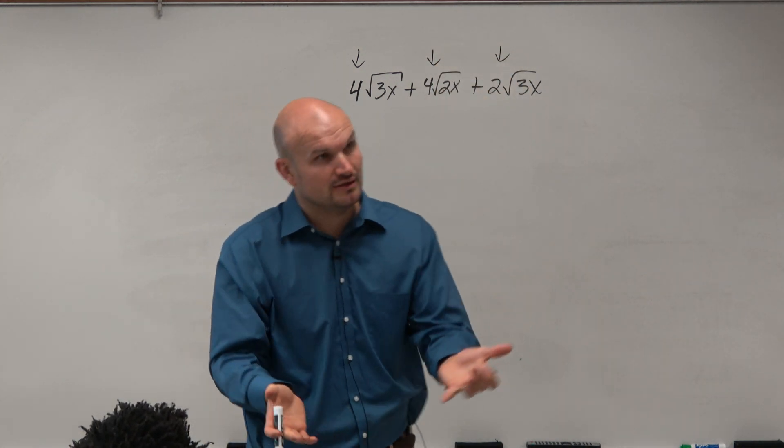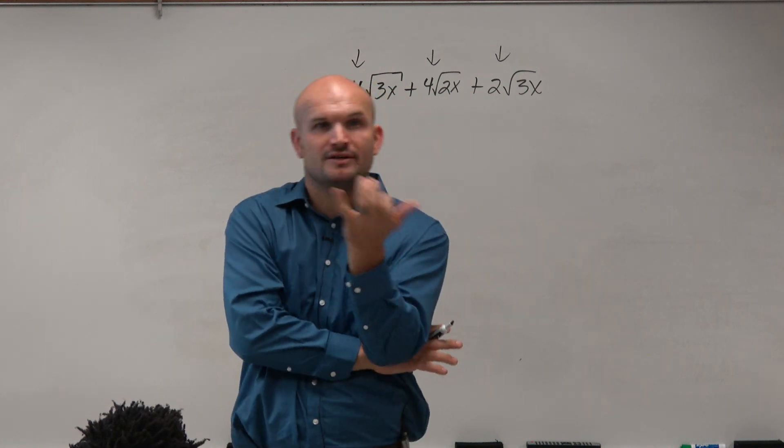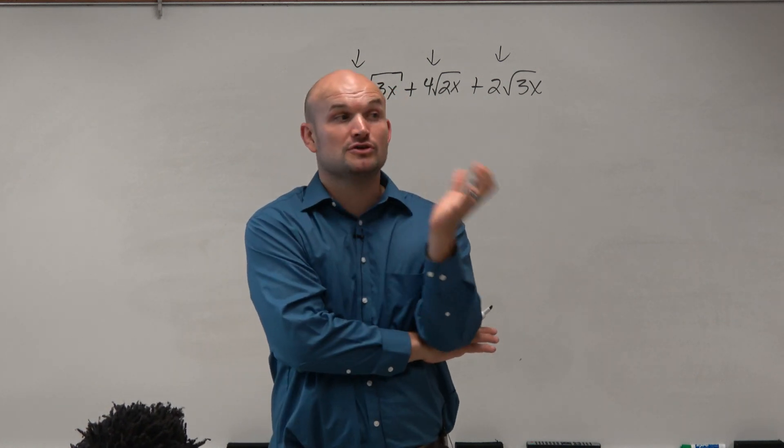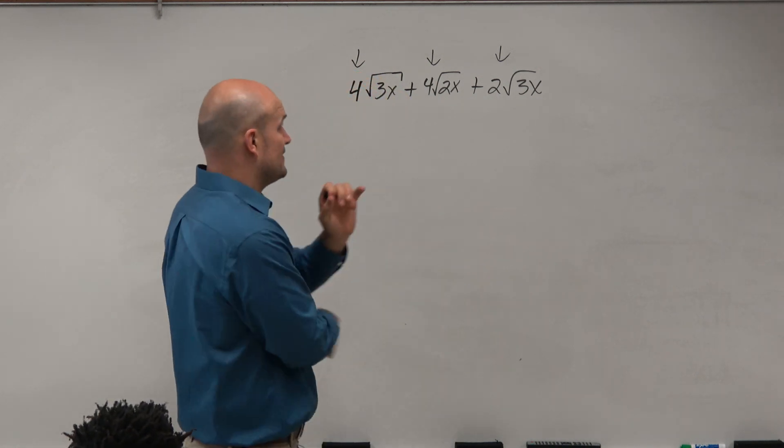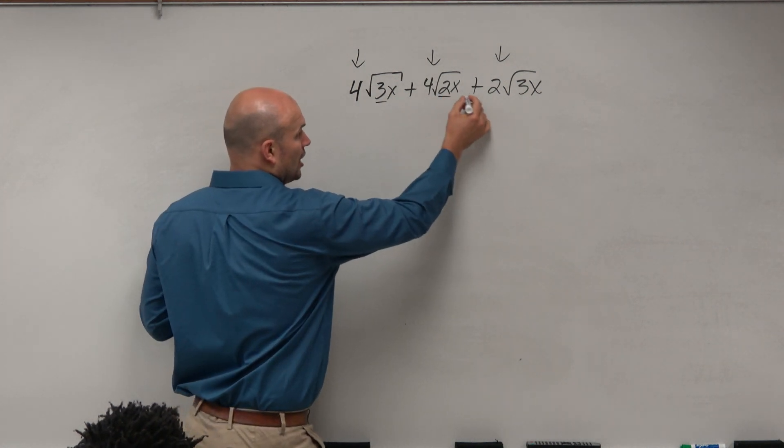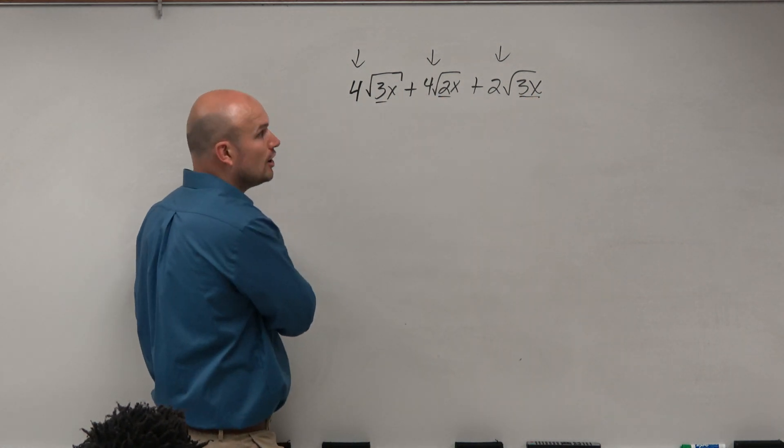We obviously have the radical, and the radicals are all square roots. It's not like cube roots and fourth roots, it's all square roots. So those are all the same, which is the index, which is very important. And then under the radical are some radicands, which are not all the same.